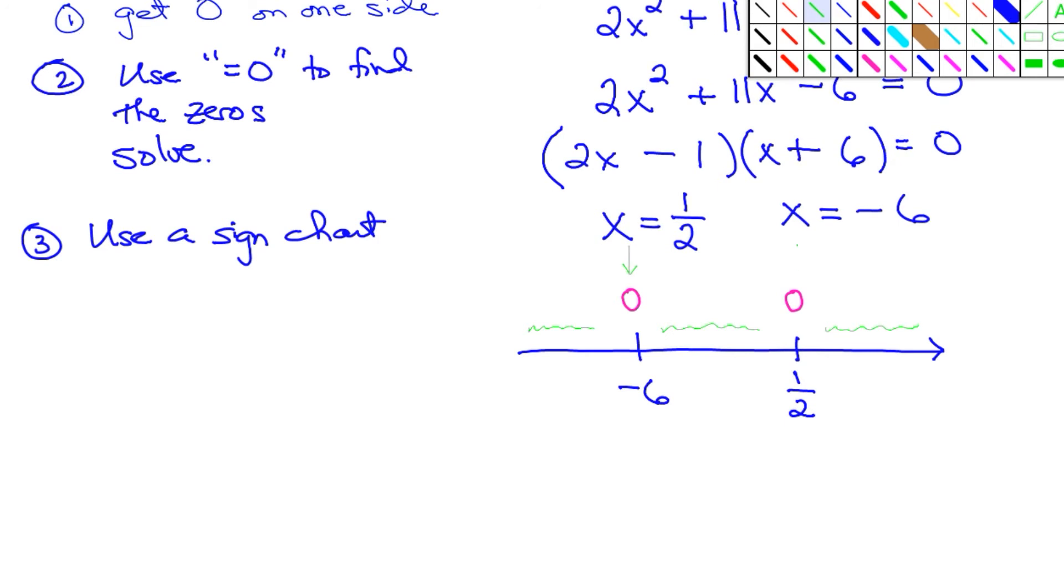Well, I've already found where the zeros are. So inside each interval, it's either all positive or all negative. We just have to figure out which one it is. So that's where we bring in the test values.